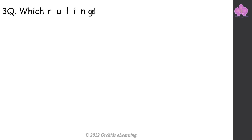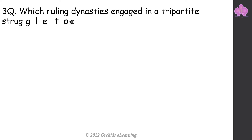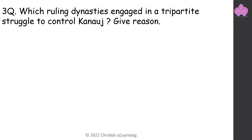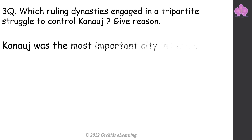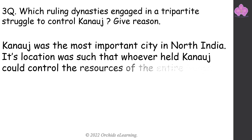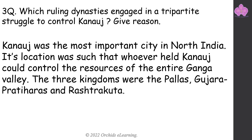Which ruling dynasties engaged in a tripartite struggle to control Kannauj? Give reason. Kannauj was the most important city in North India. Its location was such that whoever held Kannauj could control the resources of the entire Ganga Valley. The three kingdoms were the Palas, Gurjara-Pratiharas, and Rashtrakutas.